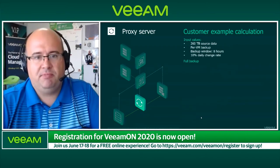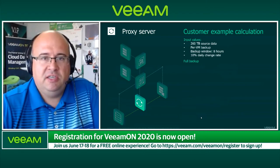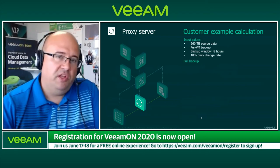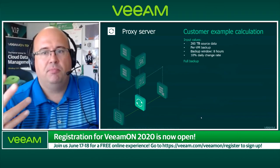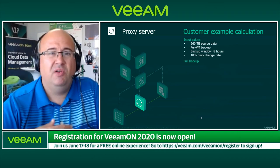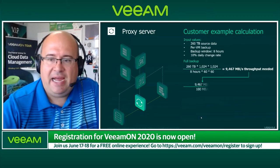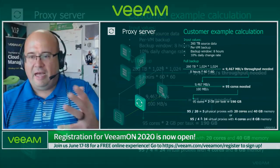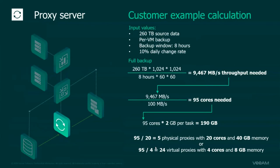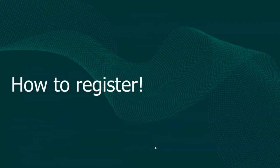I've stolen one slide about proxies — how many times do we have questions about proxies? Here's an example where Tim and Neil explain how we want to back up 260 terabytes of data with per-VM backup config, an 8-hour backup window, and planning on 10% change rate. They walk you through how much throughput is needed, the math and calculation, how many cores and how much RAM would be needed. This is wonderful information that we don't usually put out in public — here is an opportunity to really learn big time.